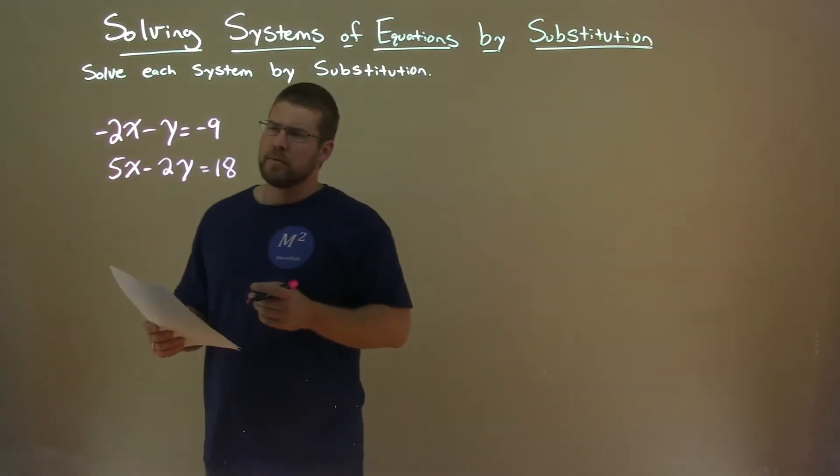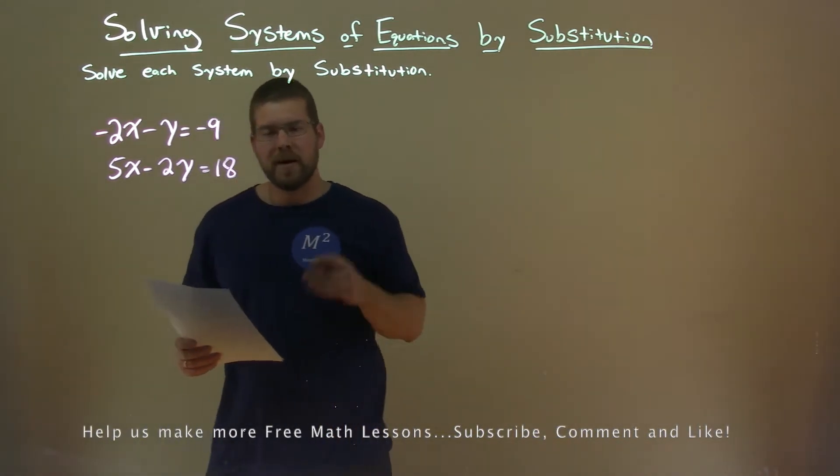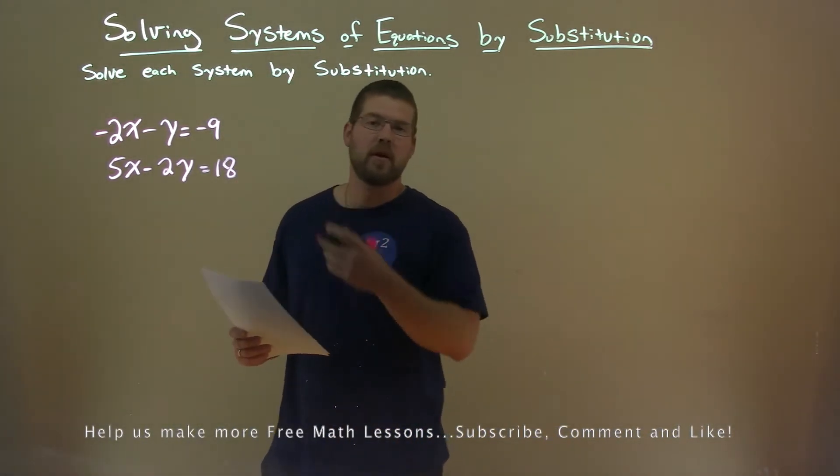We're given this problem, negative 2x minus y equals negative 9, 5x minus 2y equals 18, and we want to solve this system by substitution.